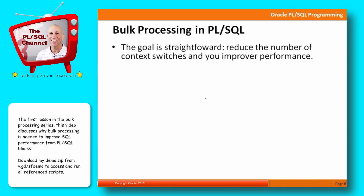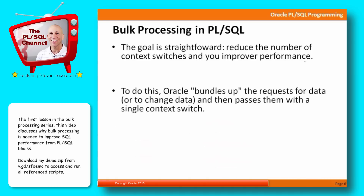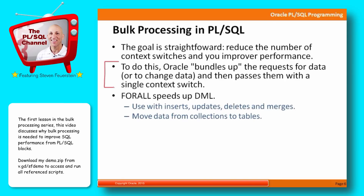So the core idea in the bulk processing features we're going to explore in this series is quite straightforward: reduce the number of context switches and you improve the performance. We'll reduce the cost of each switch, but even better is to avoid doing a context switch altogether. And that's what you get with this feature in Oracle. Essentially, Oracle bundles up the request for the data — querying data or even changing data — and communicates that request to the SQL engine with a single context switch rather than multiple context switches.